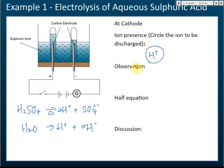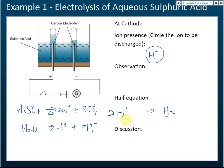Second, they want us to write the observations. But let's write the half equation first. Hydrogen ions are selected to be discharged at the cathode. After discharge, they form hydrogen molecules. To balance the equation, we need two hydrogen ions on the left to match H₂ on the right.